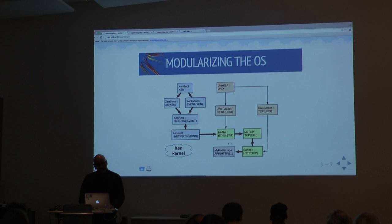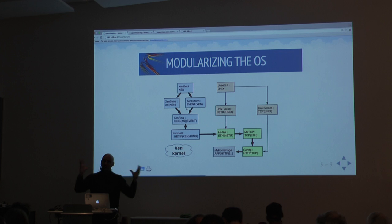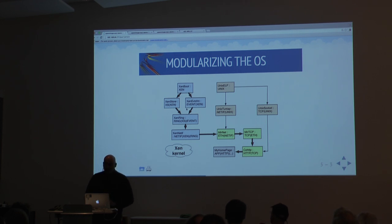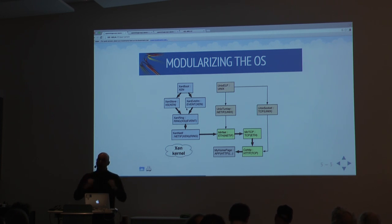This abstraction provided by functional programming is all you need to make this possible. Crucially, the person writing the code has no idea which of these paths is being taken — it's all provided by Mirage automatically. This is similar to when you configure your Linux kernel, except we do it with types in a much more structured way.